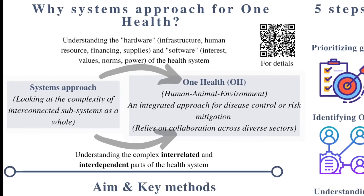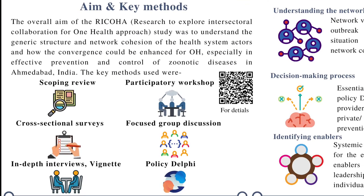With this information, the overall aim of this study was to understand the generic structure and network cohesion of health system actors, and how convergence could be enhanced for One Health — especially in effective prevention and control of zoonotic diseases in Ahmedabad, India.